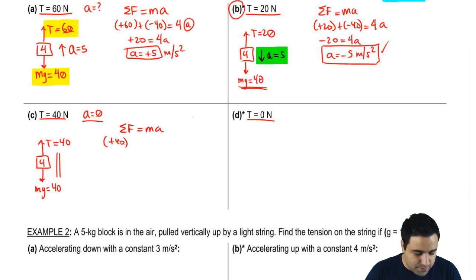I have a 40 up, and I have a 40 down. Mass is 4, and I'm looking for the acceleration. This just becomes 0 equals 4a. So a is just 0.